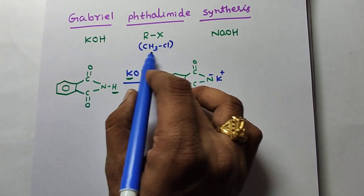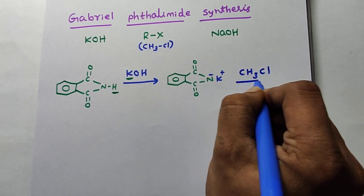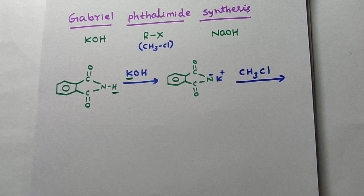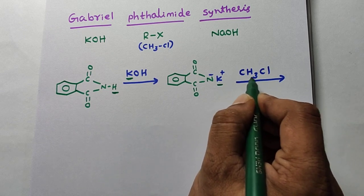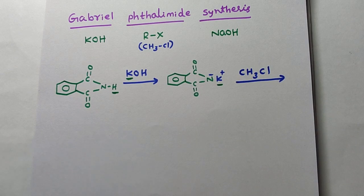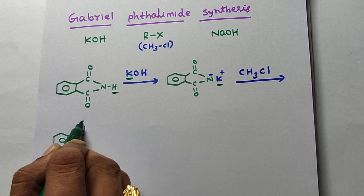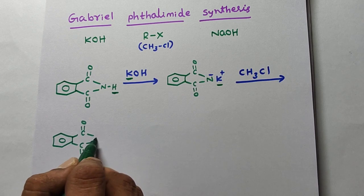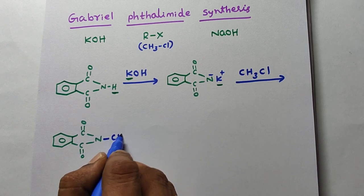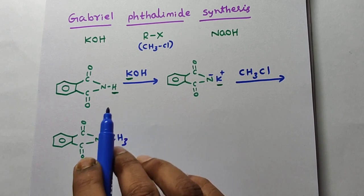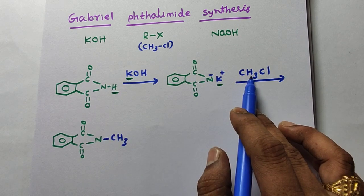Next, the second reagent is the alkyl halide — for example, methyl chloride CH3Cl. This step is also very simple. Here K⁺ (potassium) is replaced by CH3. So the product is: benzene ring, C double bond O, C double bond O, N–CH3. This is N-methyl Phthalimide.